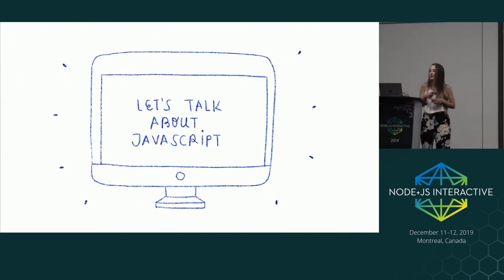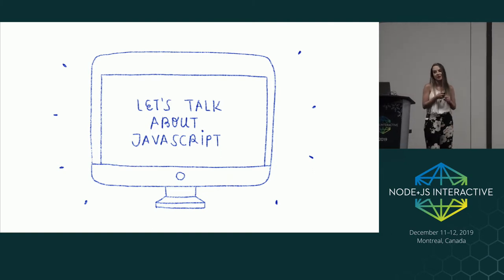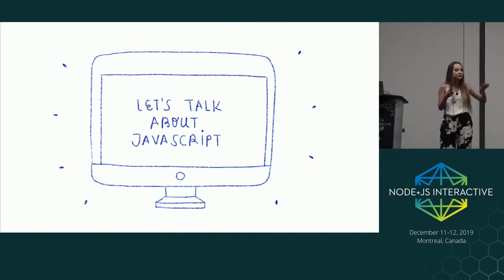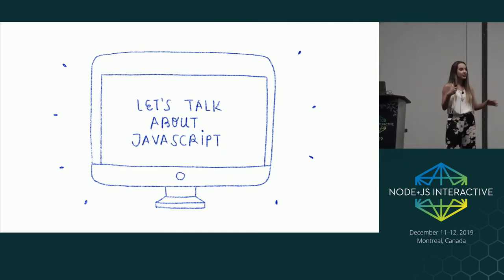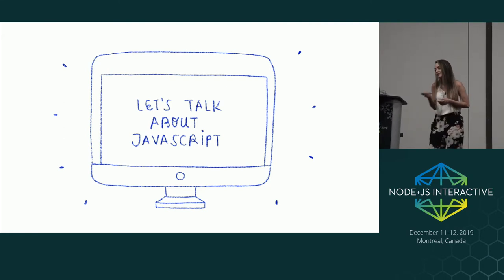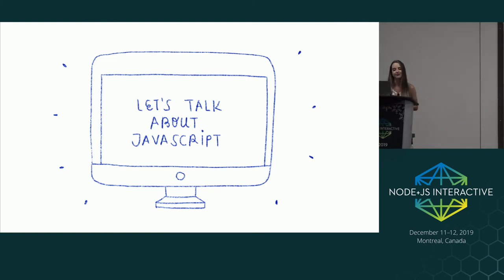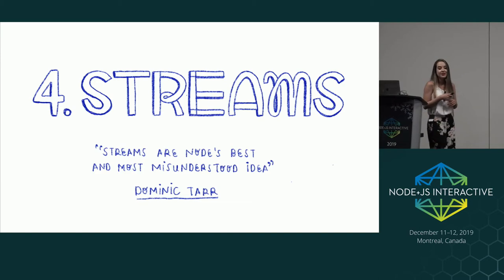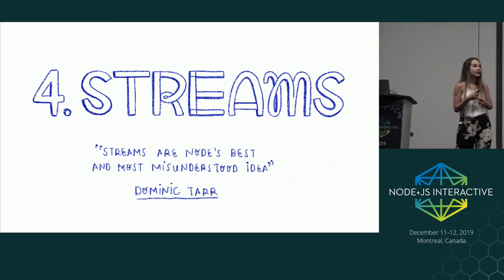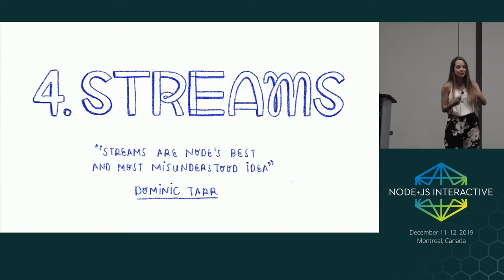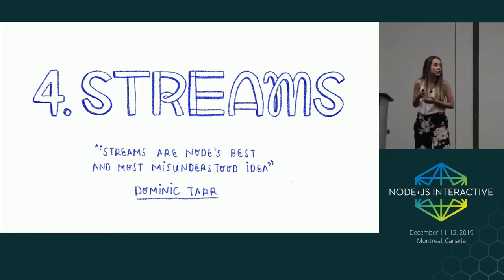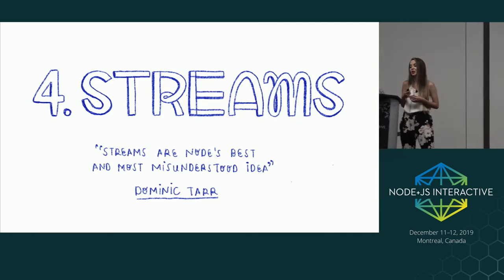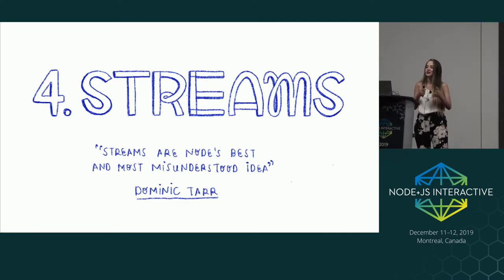Now let's talk about JavaScript. I'm going to go through four topics of Node.js and JavaScript that can be a little technical and complex to understand, but they're very useful to know and to work with. Number four: streams. Streams have the reputation of being very hard to work with and even harder to understand. In the words of Dominic Tarr, who created a very popular repo on streams, streams are the best and most misunderstood idea.